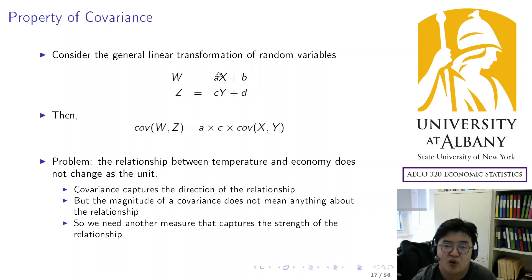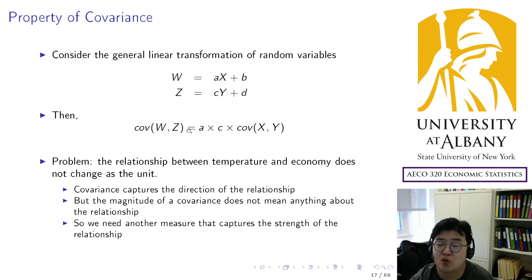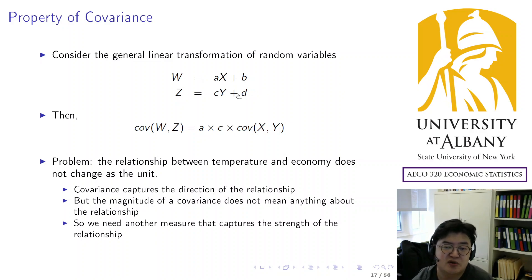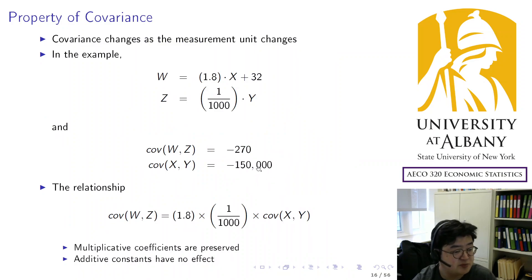In general, suppose you have original random variables X and Y, but you transform them into W and Z by multiplying A plus B or multiplying C plus D. Then the new covariance is affected only by the multiplications — A and C. The additive constants B and D do not affect the covariance at all. This is exactly the same as the variance property: addition does not change variance, but multiplication changes it.